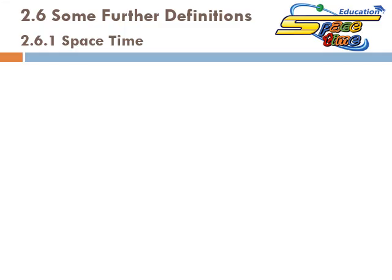So what is the space-time? Space-time is defined — when you see the three lines, it means 'defined', it doesn't mean 'equal'. Equal could be the result of mathematical operations, but this is defined. Space-time is defined as V divided by ε₀, the volumetric flow rate at the entrance.